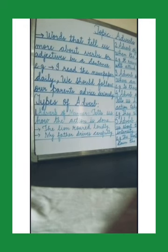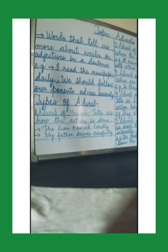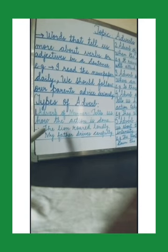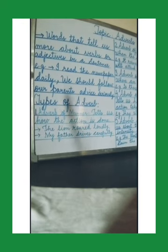Now children, there are different types of adverbs. Number one is the adverb of manner. An adverb of manner tells us how an action is done — in what manner the action is done. For example, take the sentence: 'The lion roared loudly.' Here, 'roared' is the verb, but how — in what manner — did the lion roar?